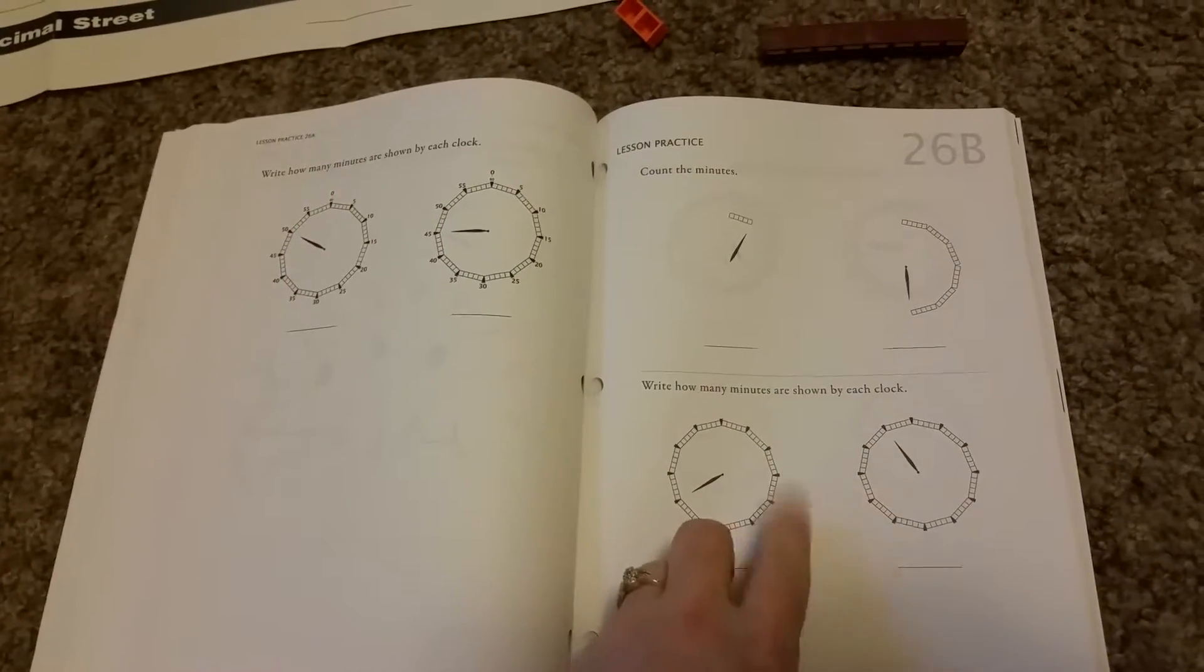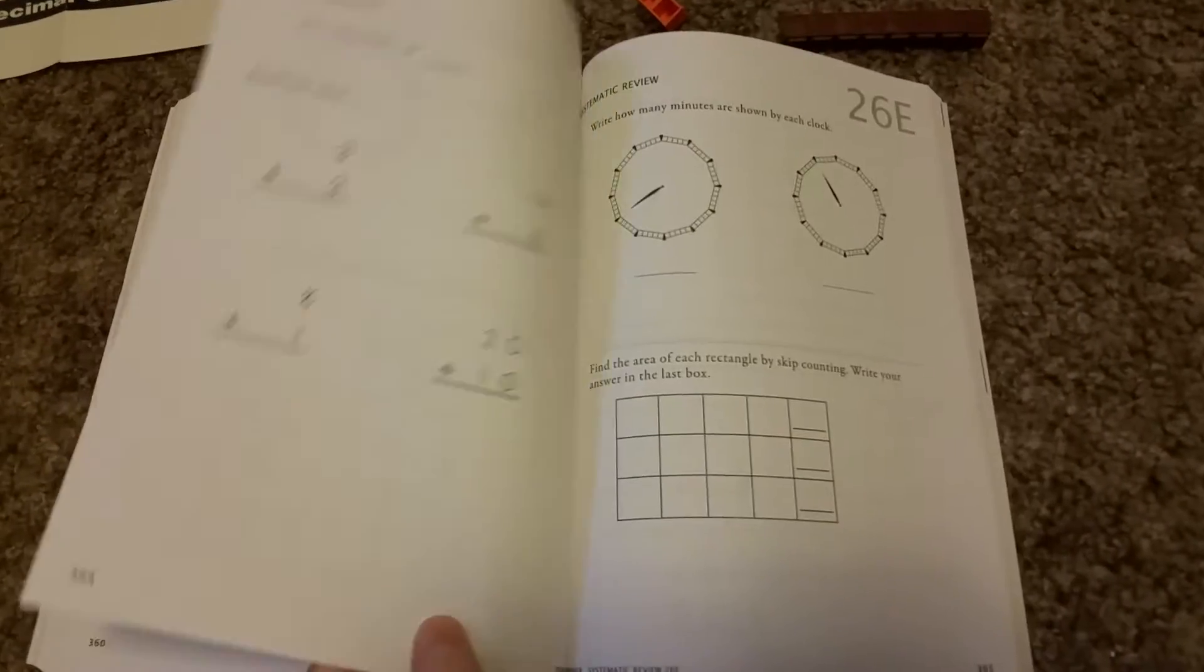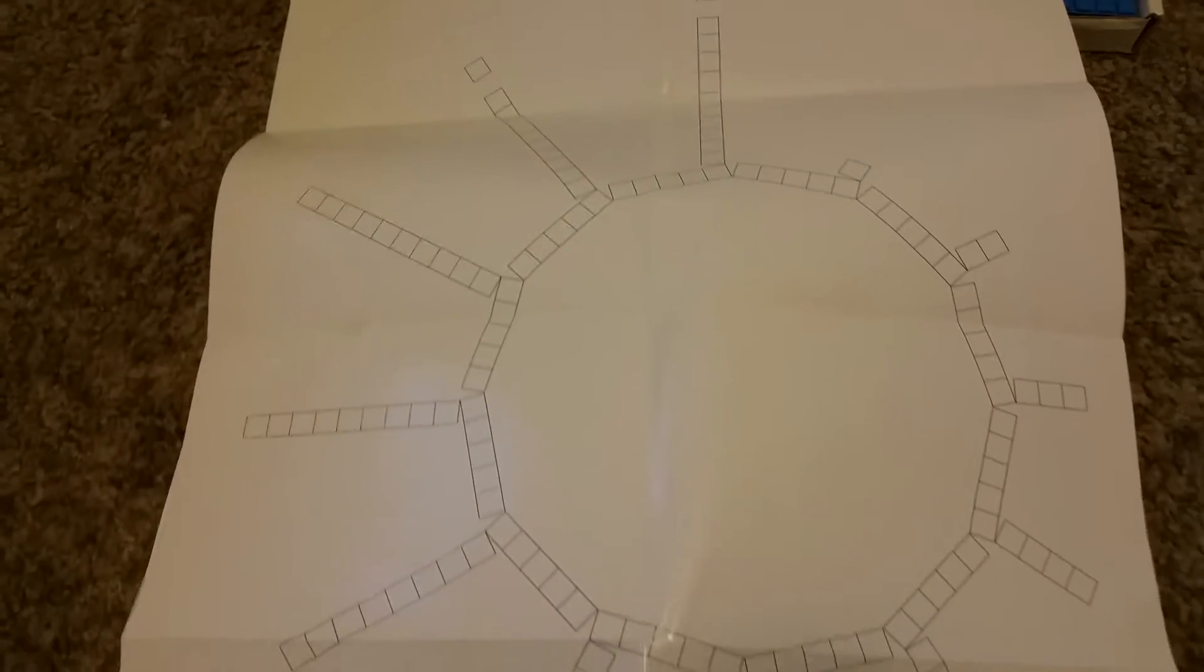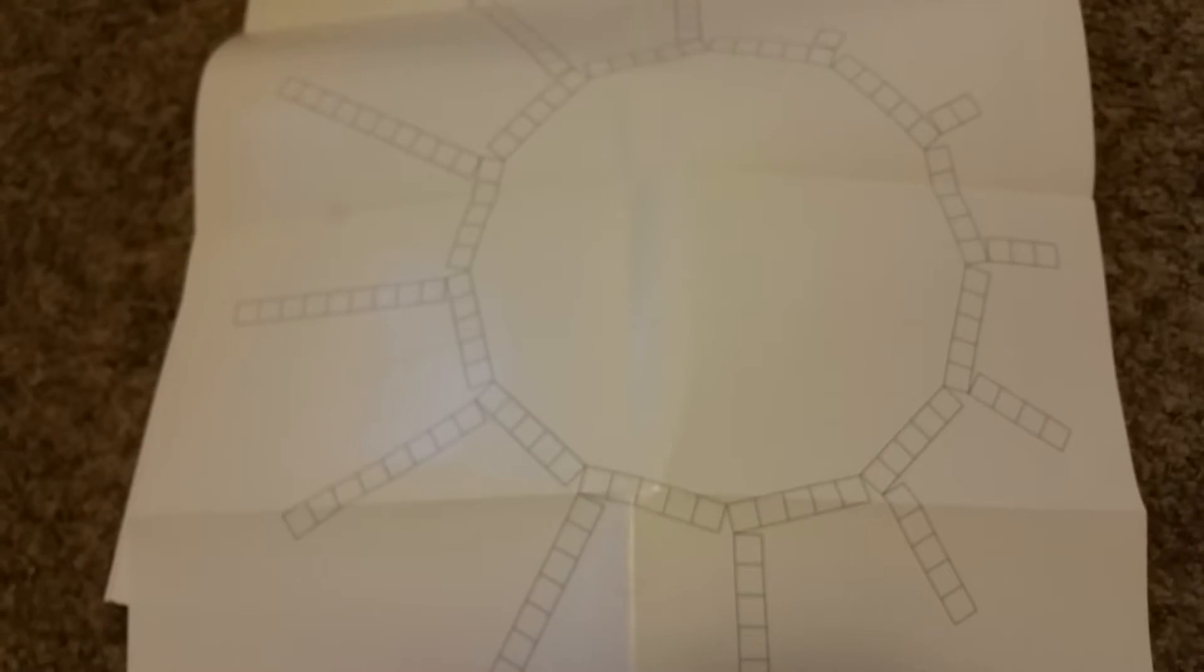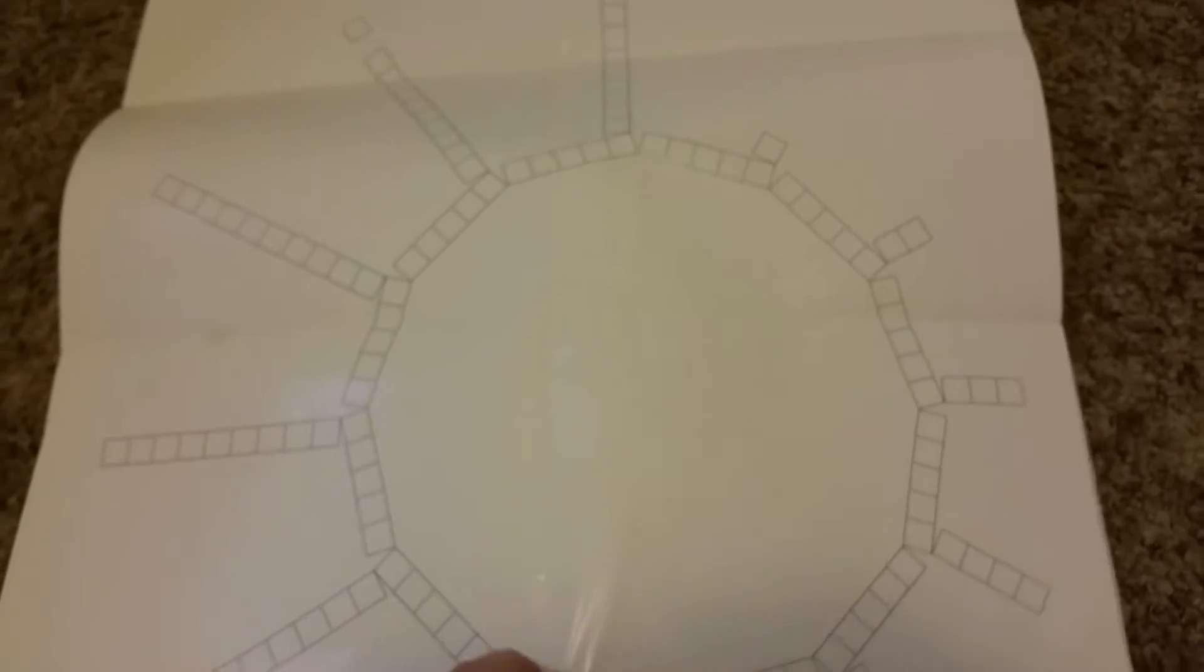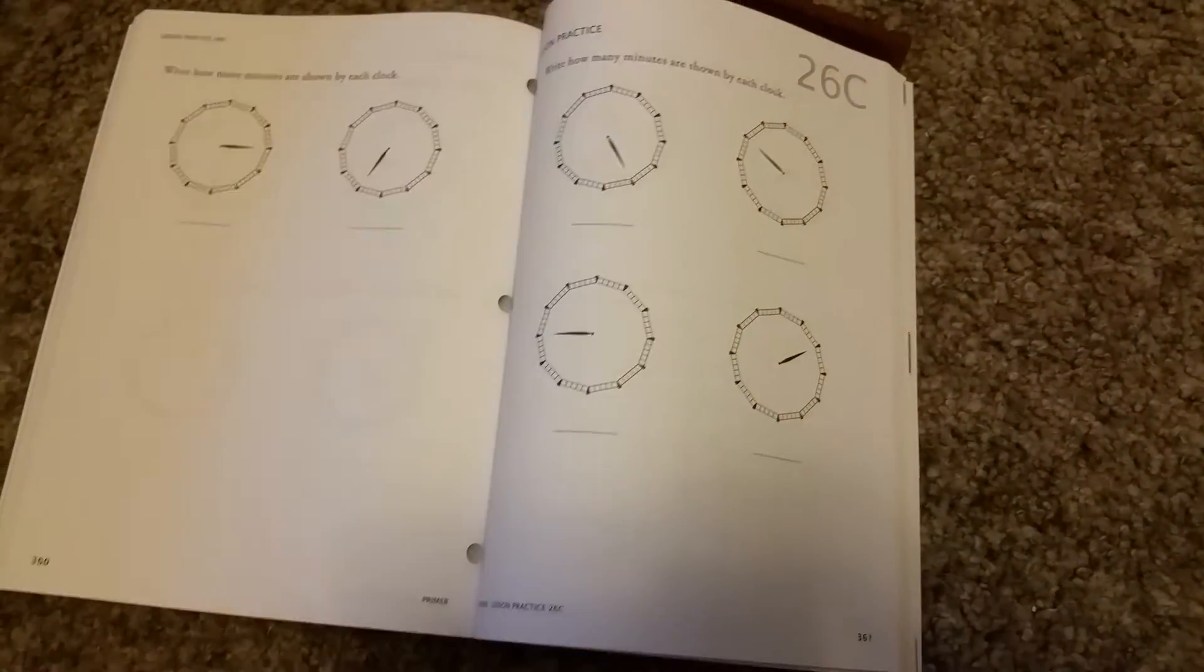At the very end, they have some clockwork for time just to introduce to time. And it's fun because you can use the back of this as a clock. If I get it in the right. There you go. And use the clocks or the blocks to put on for the clock, the block clock. Then you can learn ones and counting by fives too. So anyway, that is the kindergarten or the primer level of Math-U-See.